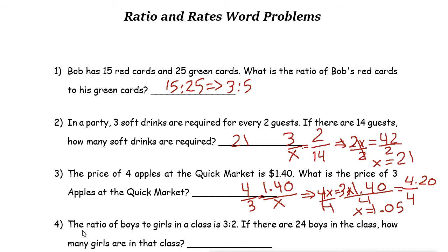Let's take a look at the next example. The ratio of boys to girls in a class is 3 to 2. So you can write the proportion here, 3 to 2. If there are 24 boys, so we know that 3 boys to 2 girls. We have 24 boys. How many girls?